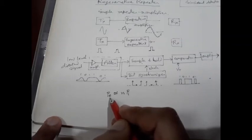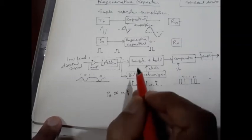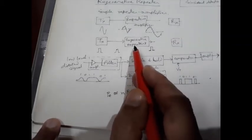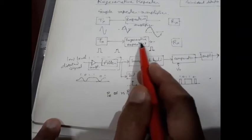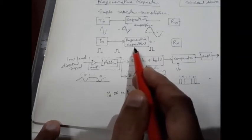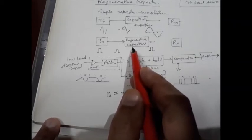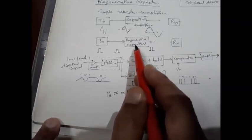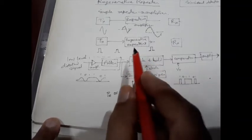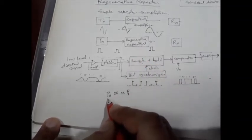That means what should be the actual number of regenerative repeaters? That is a very crucial question, and you have to select the number of regenerative repeaters keeping in mind that if we increase the number of repeaters, the effective bit error probability will increase.